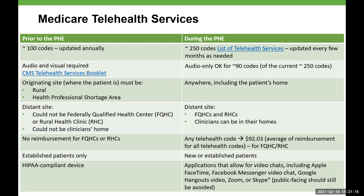Prior to the public health emergency, the distant site could not be a federally qualified health center or a rural health clinic, which made little sense because these are exactly where we need to expand access. During the PHE, the distant site has been expanded for FQHCs and RHCs, and we've seen telehealth take off in those settings. Medicare also lacked a reimbursement model for FQHCs and RHCs, but now they can bill any telehealth code and receive standard reimbursement. During the PHE, telehealth can be provided to both new and established patients — previously it was established patients only.